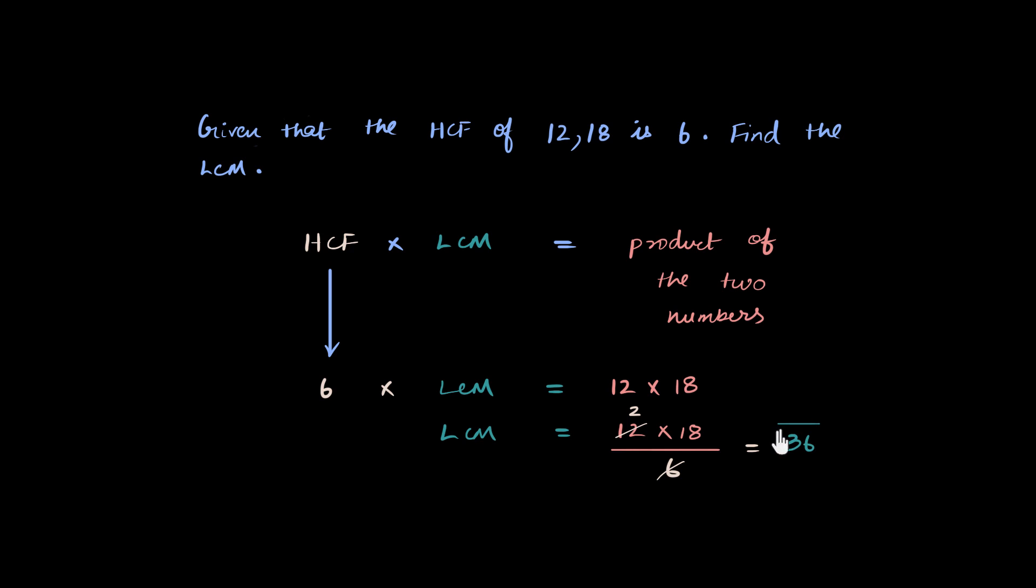So the LCM of these two numbers, 12 and 18, is 36. But you didn't do it in the usual method that you're used to. You did it this time using this new property or this new result. The main point of this video is to help you know this result that HCF into LCM equals product of the two numbers.